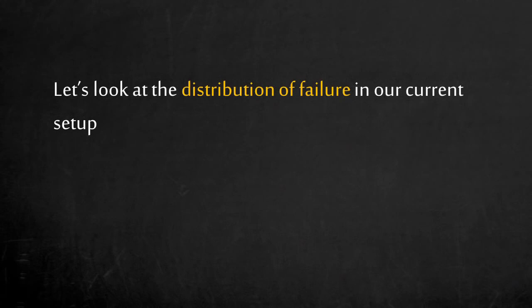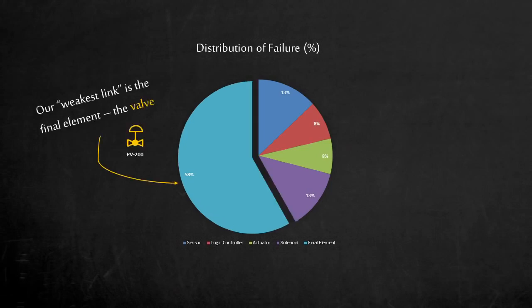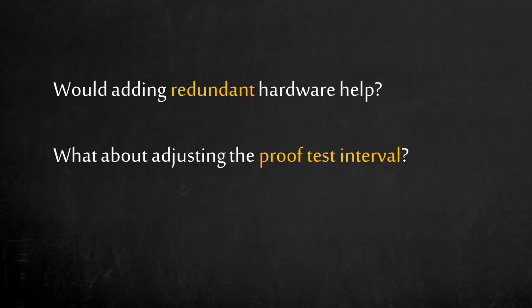Let's take a look at the distribution of failure in our current setup. We want to focus on the weakest element first. Now you can see clearly a picture of the weakest link in this safety function. Our weakest link is the final element. Our valve is contributing 58% of the total failure. Would adding redundant hardware help? What are the cost implications? What about proof testing more frequently? What is the impact to operation?